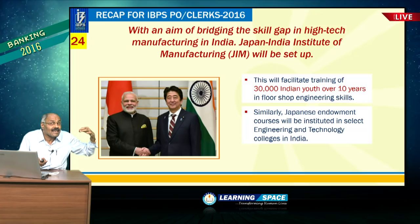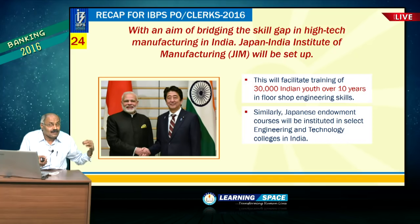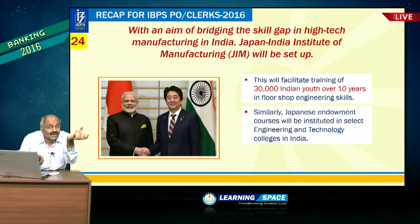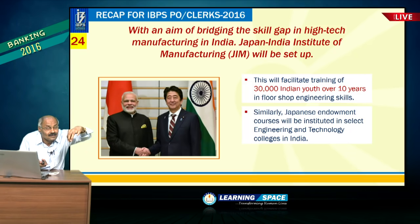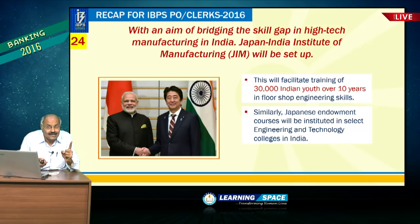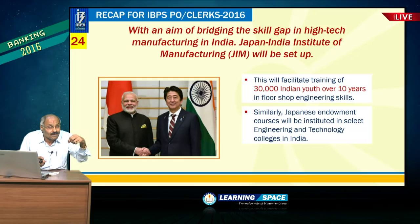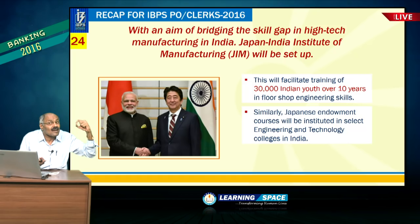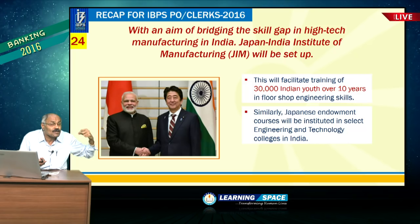Japan India Institute of Manufacturing will be set up to train people in the Japanese style of manufacturing. 30,000 Indian youth will be trained over the next 10 years. The Indian Institute of Skills — the foundation stone was laid by the Prime Minister at Kanpur — is the first IIS, also coming up at Kanpur alongside the Japan India Institute of Manufacturing.